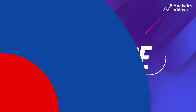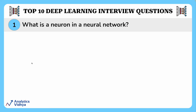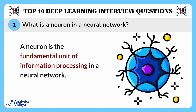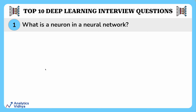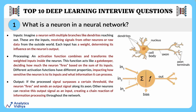The first question asks: what is a neuron in a neural network? A neuron is the fundamental unit of information processing in a neural network. In simple words, think of it as a tiny brain cell working alongside countless others to solve a complex problem. A neuron works in three basic steps: input, processing, and output.